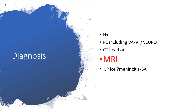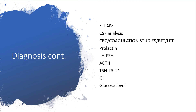How do we make a diagnosis here? First thing first: appropriate, thorough, and correct history. And we need to have a physical examination done, which must include visual acuity, visual fields, and a complete neuro-examination. We should have a CT of the head, but the best diagnostic tool here will be MRI. We must have lumbar puncture done when we are faced with signs and symptoms of meningitis. Lumbar puncture will help us with meningitis or subarachnoid hemorrhage.